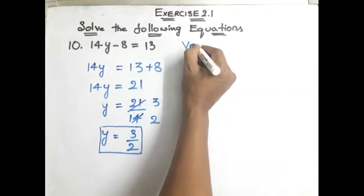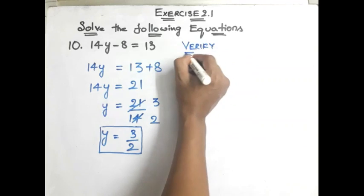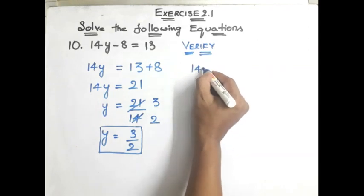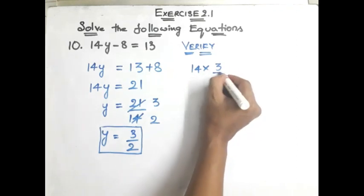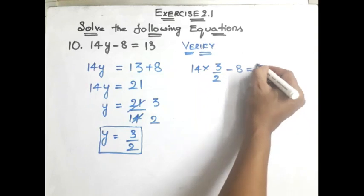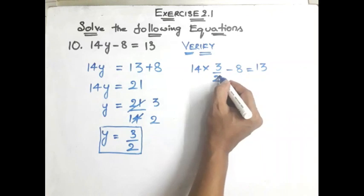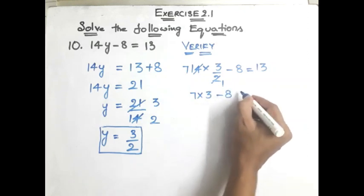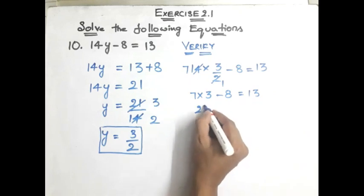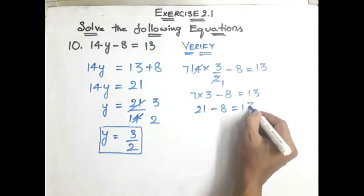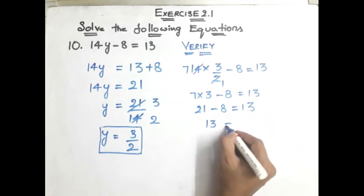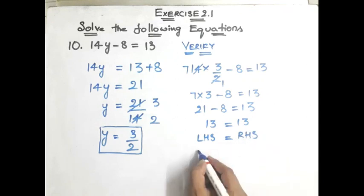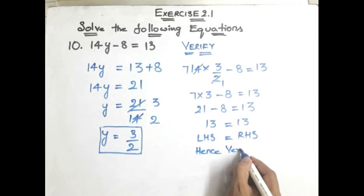Verification for problem 10 — not required to copy in CW, but for understanding: substituting y equal to 3 by 2 into 14y minus 8. We get 14 into 3 by 2 minus 8. Cancelling 2, we have 7 into 3 minus 8, which is 21 minus 8, which equals 13. So LHS equals RHS, and it is verified. The solution of this equation is y equal to 3 by 2.